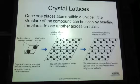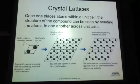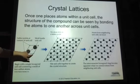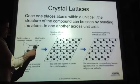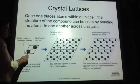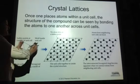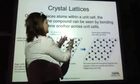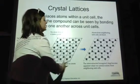A unit cell contains a specific motif of atoms — a motif is just a group of atoms. Each lattice point actually contains a group of atoms, and then the crystal structure is built up by repeating that unit cell over and over again. If I have lattice points at the corners of a unit cell, the motif of atoms is inside the unit cell, and these are my tiles — my unit cells — that we're building across.